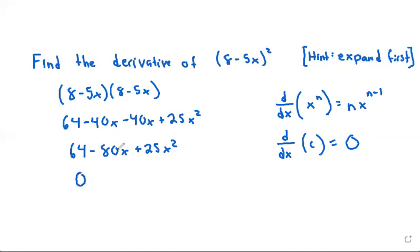The -80x without an exponent written has an invisible power of 1. We use the power rule to bring the 1 to the front, multiply it by -80 to make that still -80, and then x to the power of 1 minus 1 is 0.